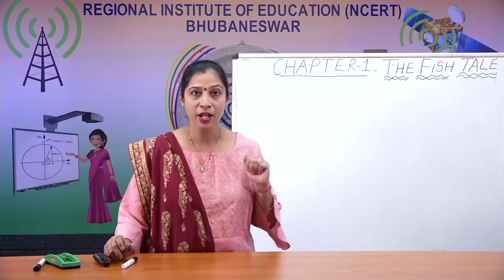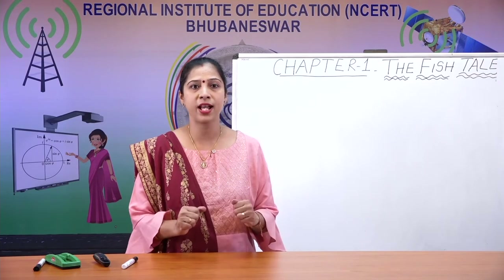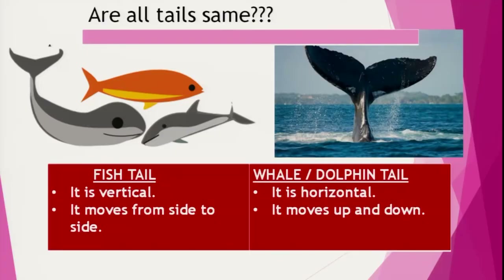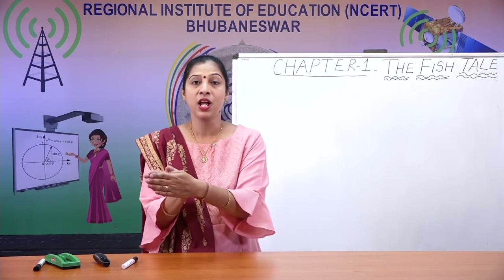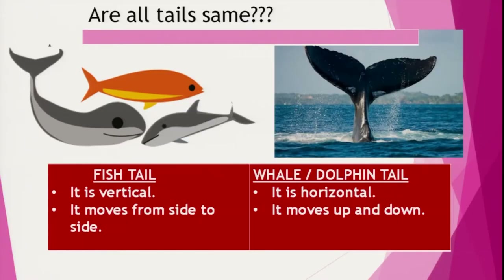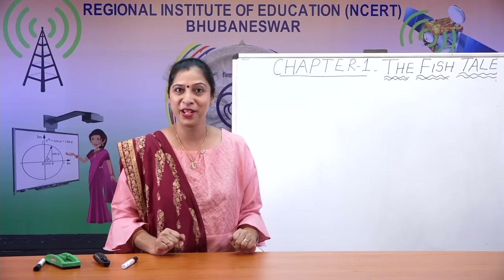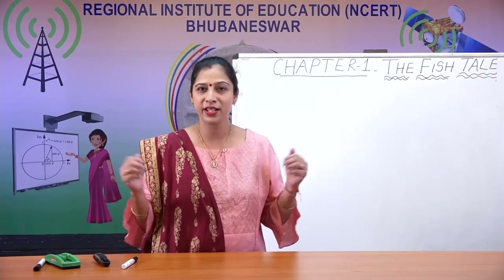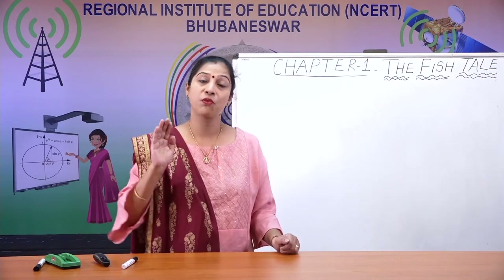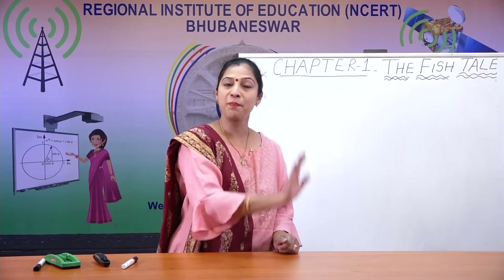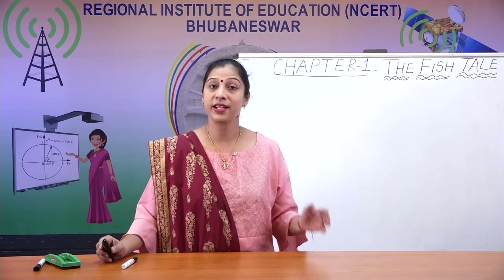The dolphin is also a mammal. Mammals are the ones who give birth to their children, while fish lay eggs. Though the whale shark lives in water, it is a mammal, not a fish. You can see from their movement in TV or movies — fish tails move side to side, while whale and dolphin tails move up and down.